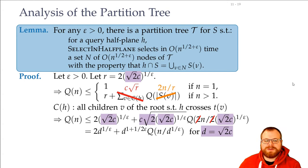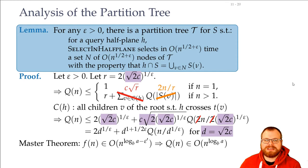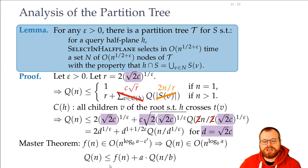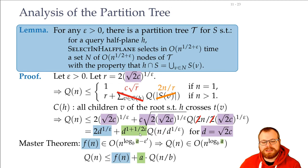To analyze this running time, we use the master theorem. The first case says if f(n) lies in order of n to the log_b(a) minus epsilon-prime, then Q(n) lies in order of n to the log_b(a). In our recurrence, a is d to the 1 plus 1 over 2 epsilon, b is d to the 1 over epsilon, and f(n) is the constant term. We need to figure out what log_a base b is.